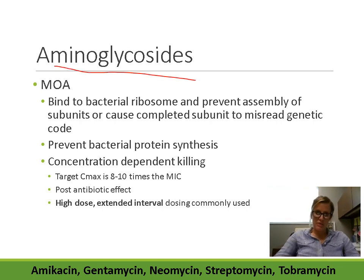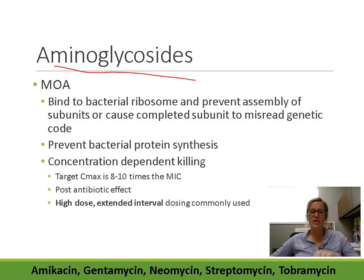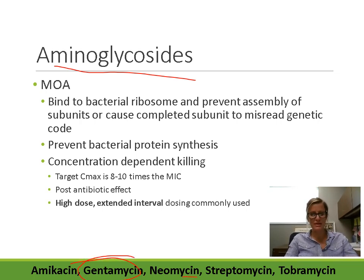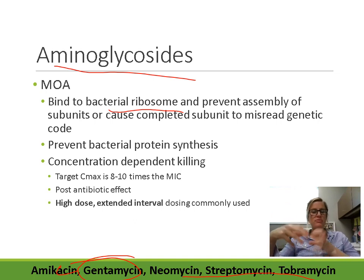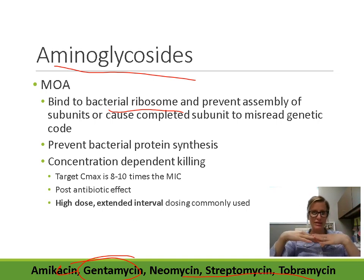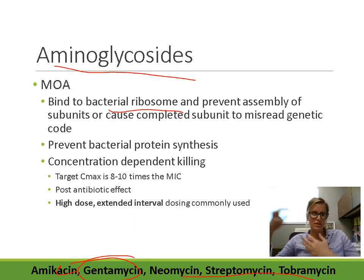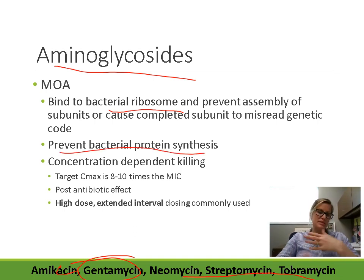Now we'll talk about the aminoglycosides. These include drugs like amikacin, gentamicin, neomycin, streptomycin, and tobramycin. The aminoglycosides also work by preventing bacterial protein synthesis. They bind to the bacterial ribosome and prevent assembly of the subunits — both ribosomal subunits must come together to read mRNA and link amino acids. They can also cause the completed subunit to misread the genetic code. Overall, they prevent protein synthesis in bacteria.